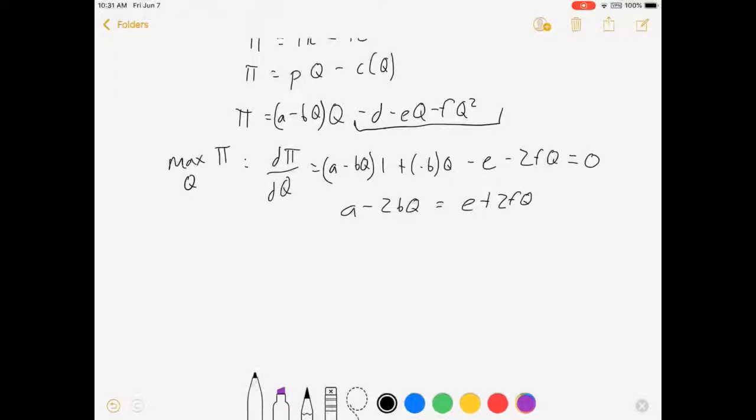Now one important note here. This thing equals that thing. If you took a class where we didn't have calculus or even in your principles class, you probably saw this written a lot. Marginal revenue equals marginal cost. That's what we have here.